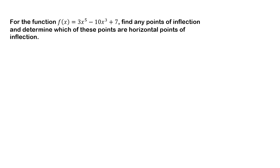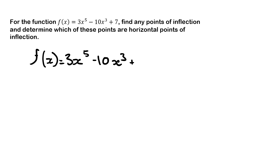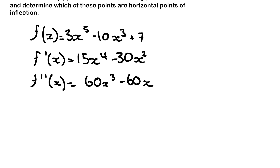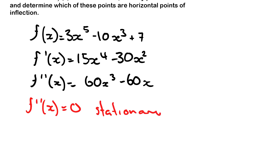The next problem gives us the function 3x to the power of 5 minus 10x cubed plus 7, and we need to find any points of inflection and determine which are horizontal points of inflection. We start the same way — write out the function, find the first derivative, then the second derivative. We then set the second derivative equal to zero, giving us 0 equals 60x cubed minus 60x.